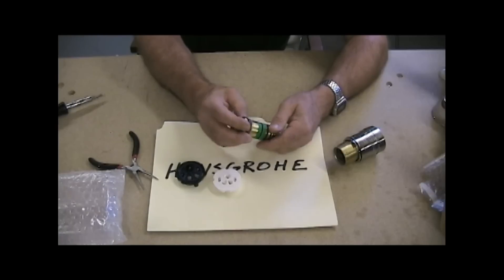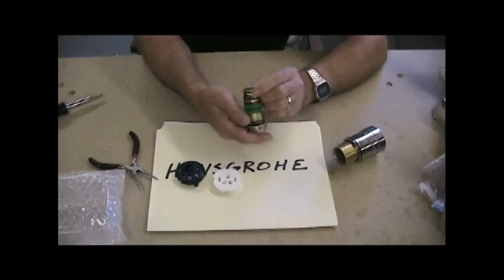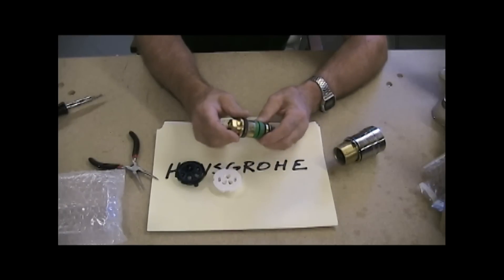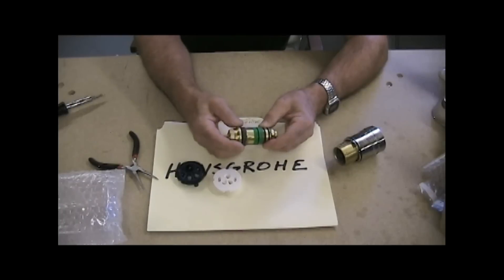Hans Grohe is not the only one that makes thermostatically controlled valves. A lot of the other companies do. Kohler makes some and Moen makes some. But Hans Grohe and Grohe were the two companies that kind of invented this. This is filled with, it's sealed and filled with a form of paraffin wax.